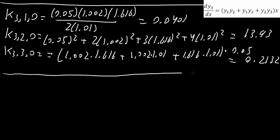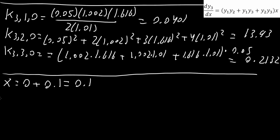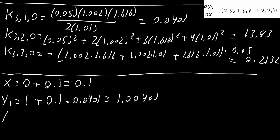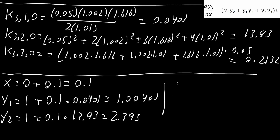Now things change slightly. For the final round, x equals the initial value 0 plus the step size 0.1, giving 0.1. y1 equals 1 plus 0.1 times 0.0401, giving 1.00401. y2 equals 1 plus 0.1 times 13.93, giving 2.393. y3 equals 1 plus 0.1 times 0.2132, giving 1.021.